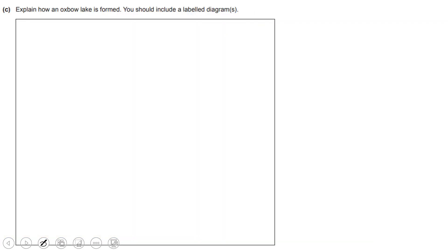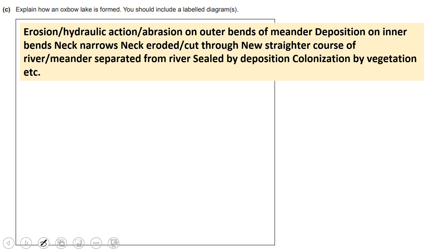Explain how an oxbow lake is formed — include a diagram. An oxbow lake is formed from meanders. There is erosion (hydraulic action or abrasion) at the outer bend and deposition at the inner bend. Further erosion on the outer bend and deposition on the inner bend make the neck of the meander become increasingly narrow. During periods of heavy rainfall or flooding, the neck can cut through.